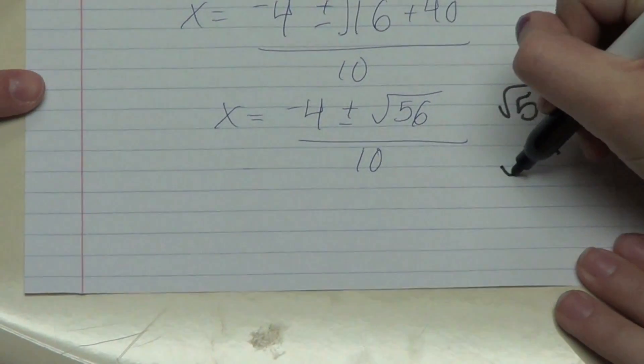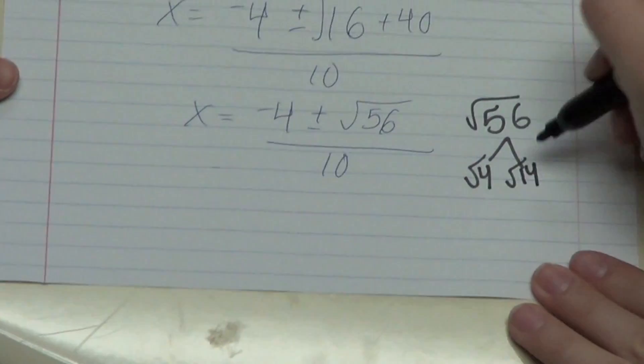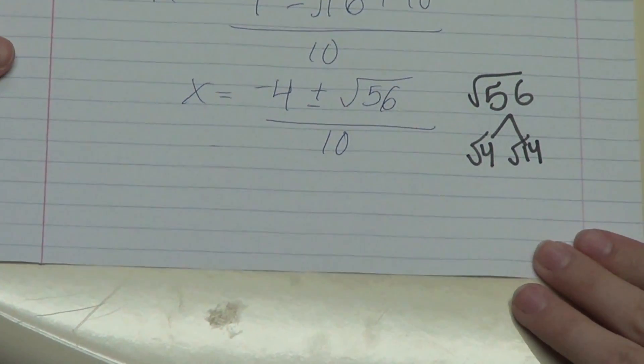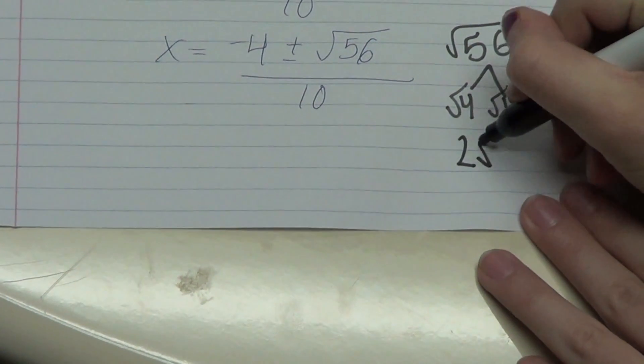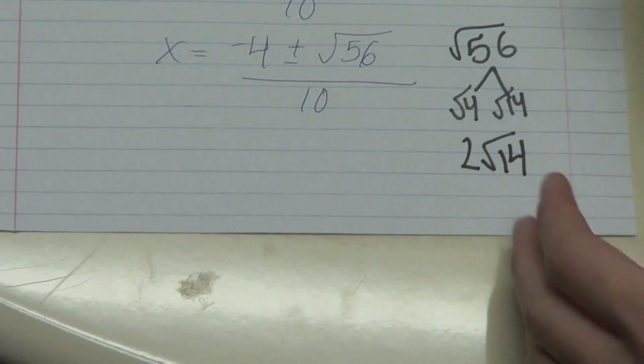That breaks up into rad 4 and rad 14. And then do you know what the square root of 4 equals? 2. Yep. So now you're going to have 2 rad 14. Can you finish the equation? Yes.